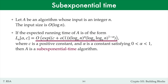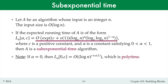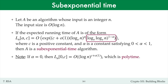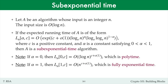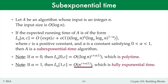To make sense of this complicated expression, let's see what happens when alpha equals 0 and when alpha equals 1. When alpha equals 0, this term is 1 and this term is log log n. E cancels with one of the logs, and so the expression becomes log n to the power c plus little o of 1, and so L_n[0, c] is polynomial in log n. On the other hand, if alpha equals 1, then this expression is log n, whereas this expression becomes 1, giving n to the power c plus little o of 1, which is fully exponential in log n.